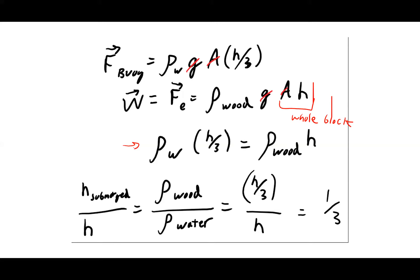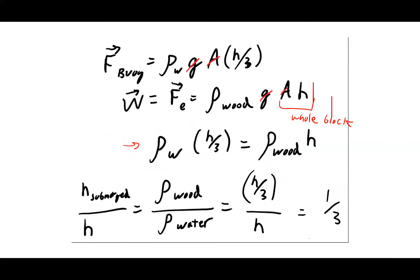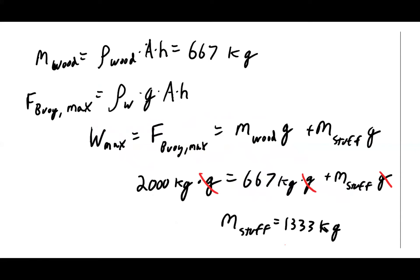The next part asks how much weight can be stacked on top. As I stack weight, the upward force needs to be larger, so more of the block goes underwater. The limiting case is when nearly the whole block is submerged. The maximum buoyant force is the density of water times the volume of the entire block times g. If the maximum buoyant force corresponds to 2,000 kilograms times g, then I can pile on another 1,333 kilograms before the block sinks.